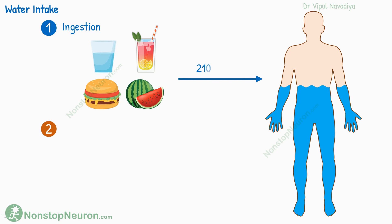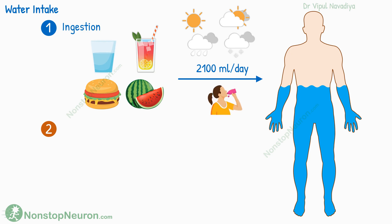Normally, the water intake by liquid and food combined is about 2100 milliliters per day. However, this quantity varies widely depending on the climate, habit, and physical activity. Ingestion of water is controlled by thirst centers in the hypothalamus.